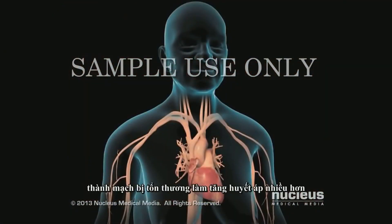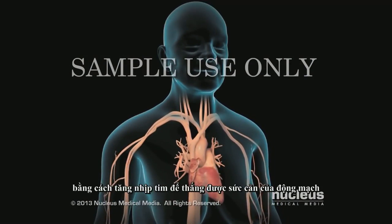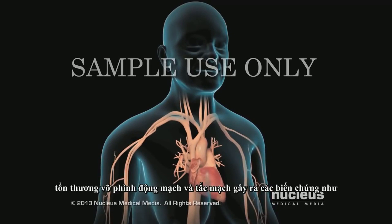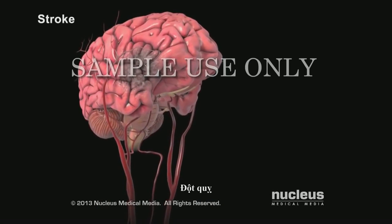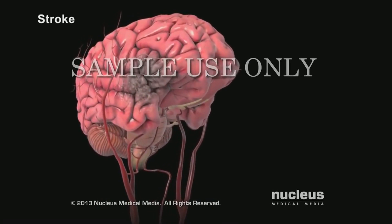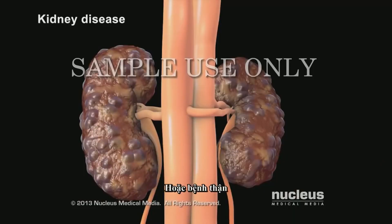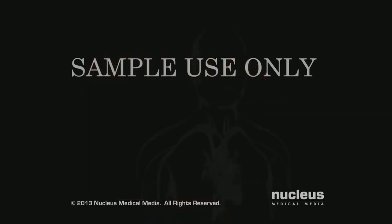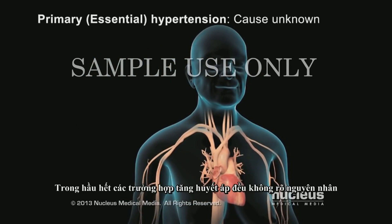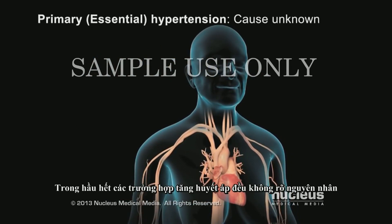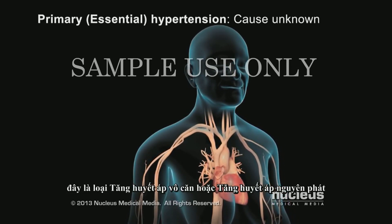Damage to your arteries raises your blood pressure even more by making your heart beat more forcefully. Artery damage and reduced blood flow lead to conditions such as a stroke, heart attack, or kidney disease. In most cases the cause of high blood pressure is unknown — this type is called primary or essential hypertension.